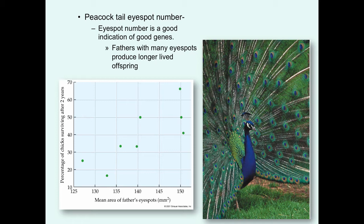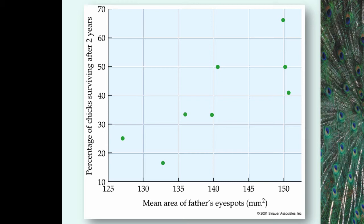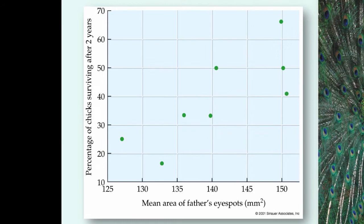Studies of peacocks have indicated that the number of eye spots a male has in his display train is a good indication of his overall good genes. Rather than looking at a specific aspect of male health, this study examined the number of eye spots males have and the final end product — the survival rate of the young that he fathers. Fathers with more eye spots produce longer-living offspring with much higher survival rates after a two-year period.